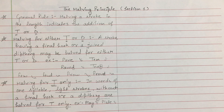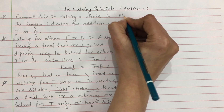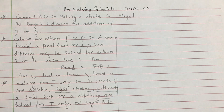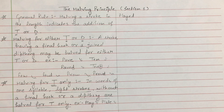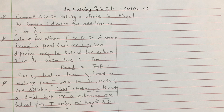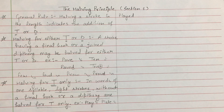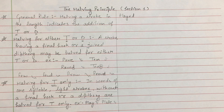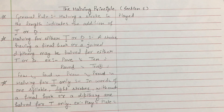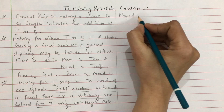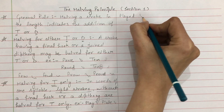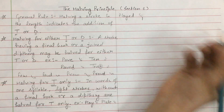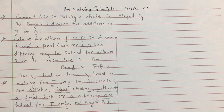But अगर आपको word 'plaid' लिखना है — P के साथ L की hook join करते हुए D indicate करने के लिए आप half नहीं कर सकते। यहाँ पर beginning hook है, final hook नहीं है। इसलिए D का full stroke लिखना होगा — P के साथ L की hook and D को use करते हुए 'plaid' की outline create करेंगे।